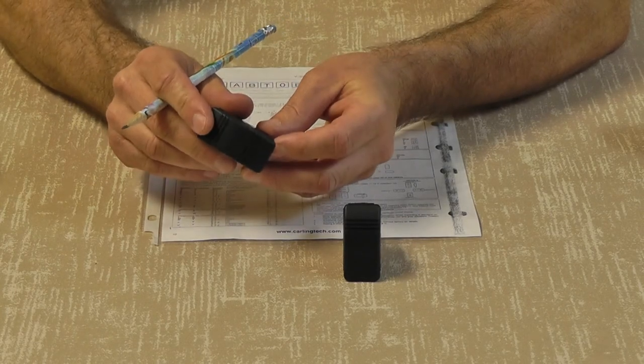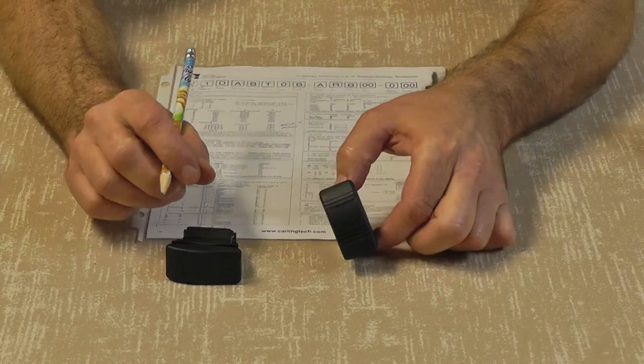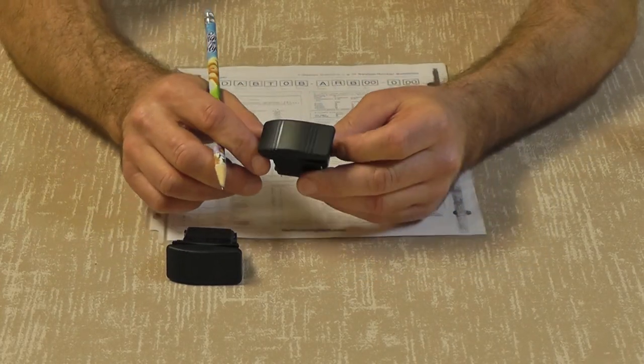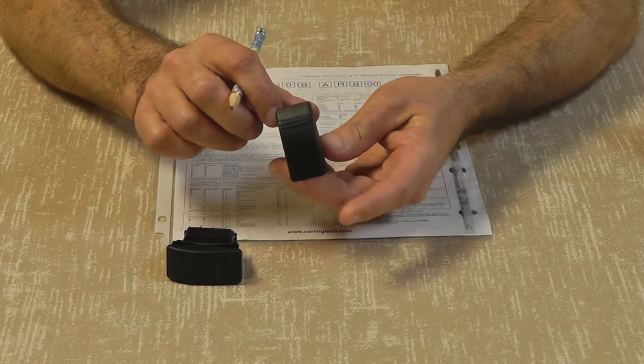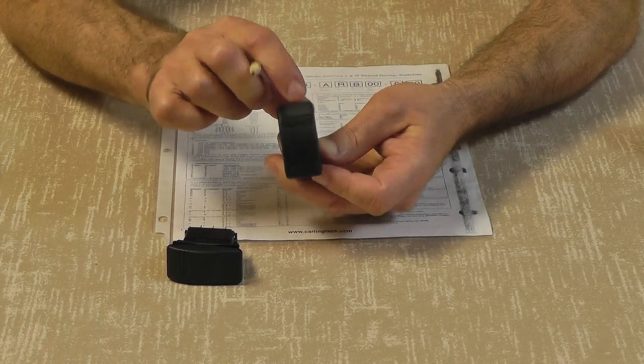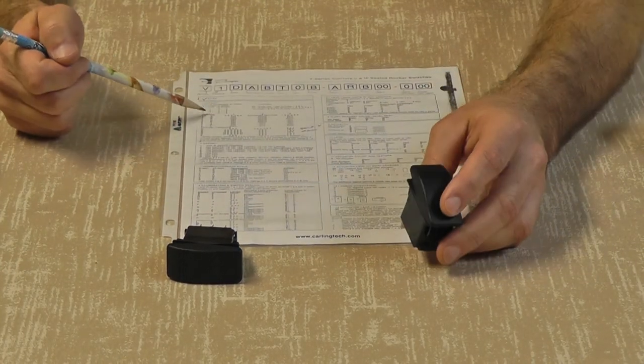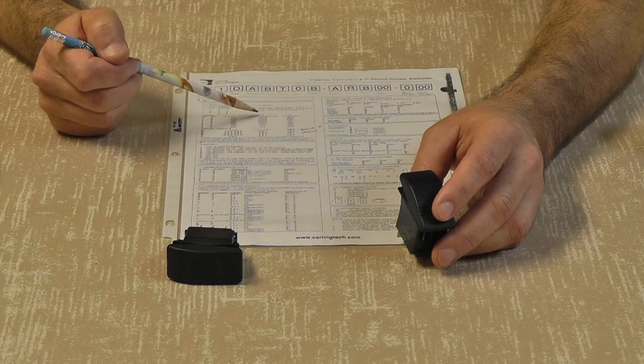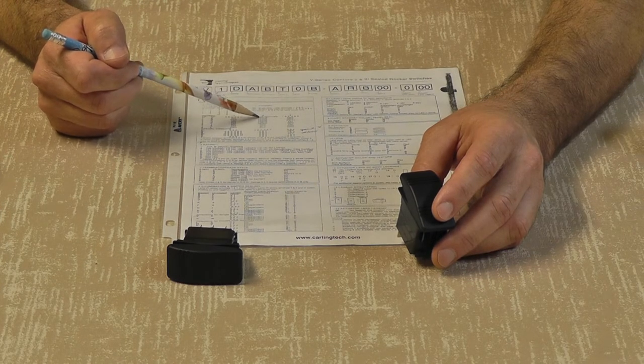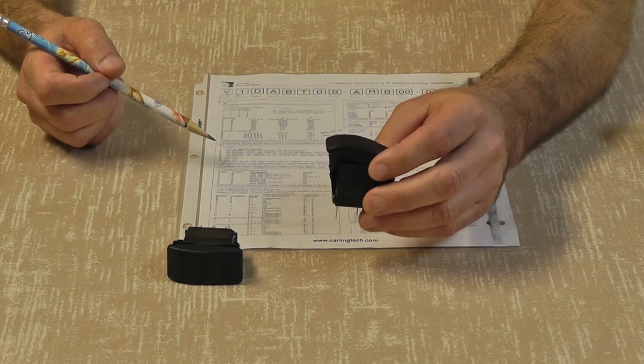On an on, off, on switch, you have all three actuator positions. On a simple on, off switch, you're not going to have a number two position. It's either in number one or it's in number three. It skips right over number two. So you have one or three. And that's why you see in some of the part numbers that under position number two it says none. Those are going to be your on, off switches and your momentary on, off switches.